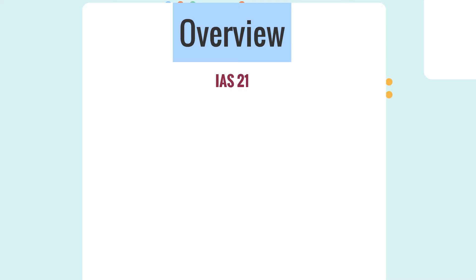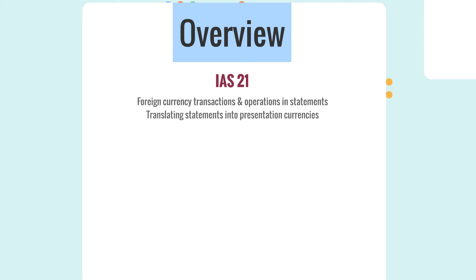Hello and welcome to this Astranti YouTube video. In this short video we'll be going through some of the provisions of IAS 21, which is a key accounting standard when it comes to accounting for foreign transactions and foreign operations. The objective of this standard is to prescribe how to include foreign currency transactions and foreign operations in the financial statements of an entity, and how to translate financial statements into what is called a presentation currency.